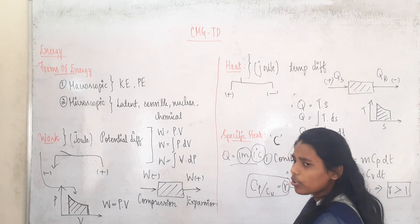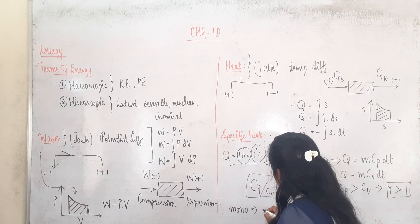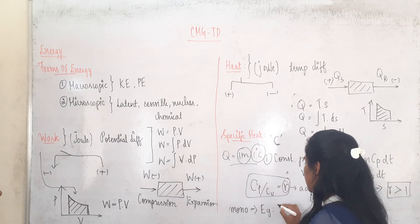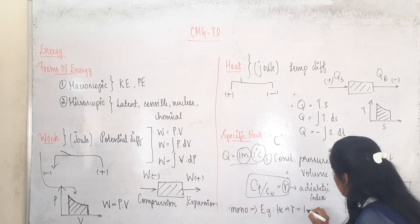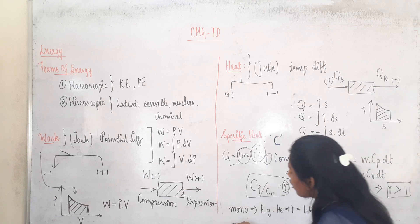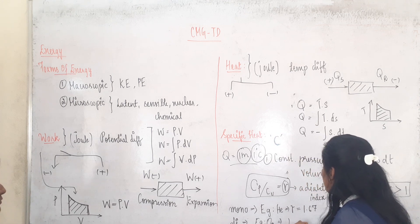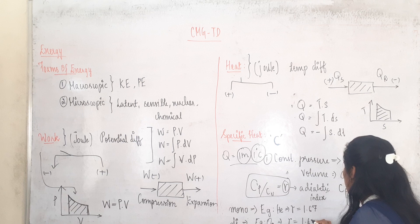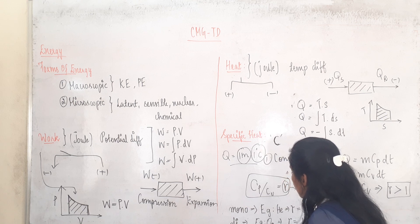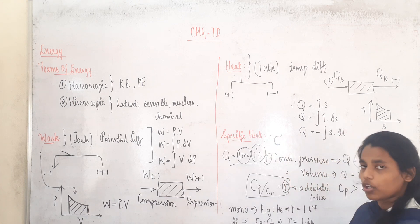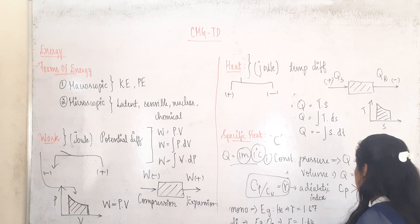Now we can see three types of gases: monoatomic gases, diatomic gases, and triatomic gases. For monoatomic gases, for example helium, the gamma value will be 1.67. For diatomic gases, for example oxygen, the gamma value will be 1.44. For triatomic gases, for example carbon dioxide, the gamma value will be 1.3.